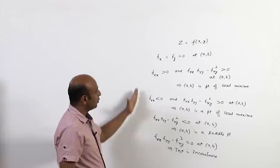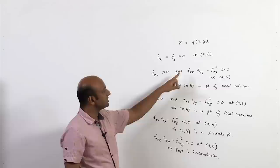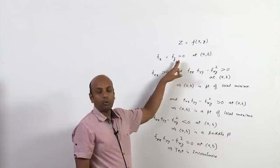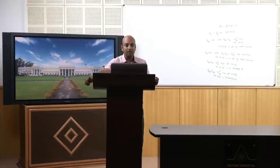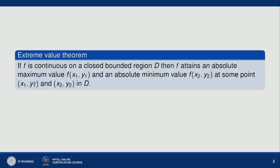This we have already seen in the last lecture — that if these conditions hold, then we can say the point (a,b), which is a critical point where f_x = f_y = 0, is a point of local maxima, local minima, or saddle point determined by the second-order derivative test. In this lecture we will deal with finding absolute maxima or absolute minima on a closed bounded region.